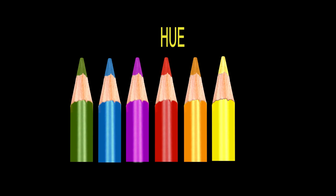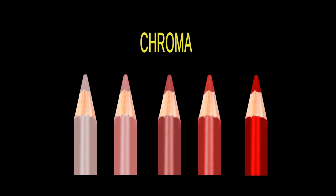Chroma. Chroma is the saturation or purity of a color. How much red is in this color? The more red, the more chroma the color has.